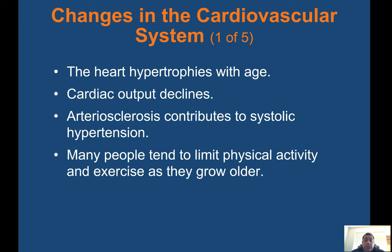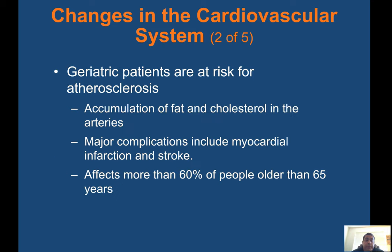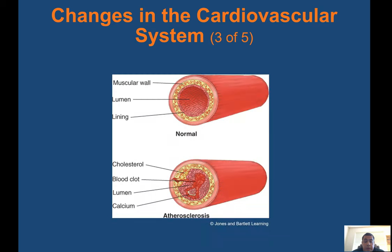Changes in the cardiovascular system: the heart hypertrophies with age, cardiac output declines, and arteriosclerosis contributes to systolic hypertension. Many people limit physical activity as they grow older. Geriatric patients are at risk for atherosclerosis — the accumulation of fat and cholesterol in the arteries. Major complications include myocardial infarction and stroke, affecting more than 60% of people older than 65 years. Cholesterol buildup causes plaque, narrowing blood vessels, which is why a healthy diet is important to prevent heart attacks.